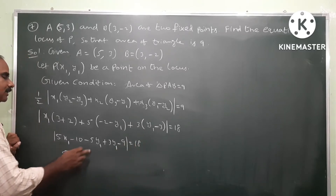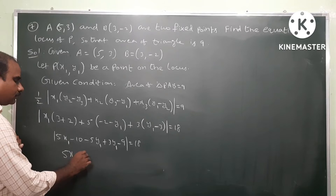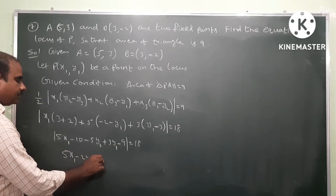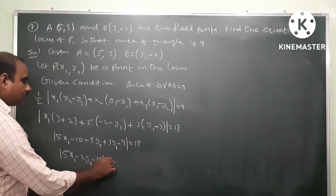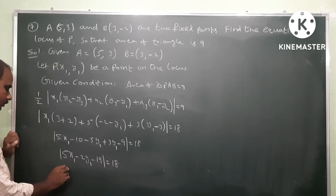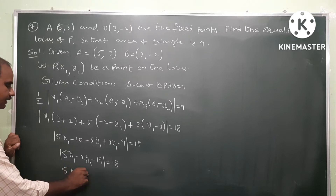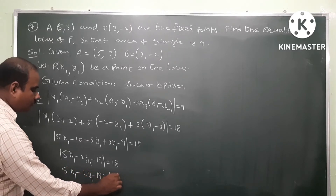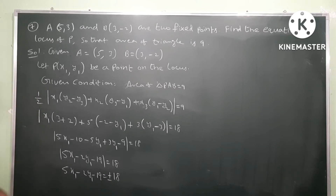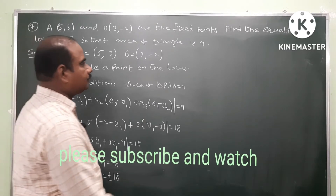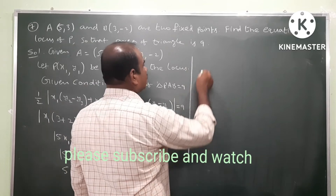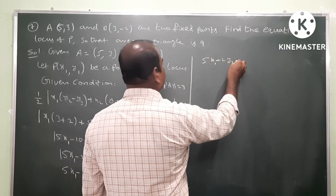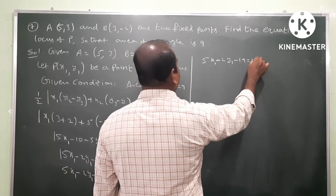Simplifying further: 5x1 - 2y1 - 19 under modulus equals 18. Since the modulus equals 18, we get plus or minus: 5x1 - 2y1 - 19 equals plus or minus 18.